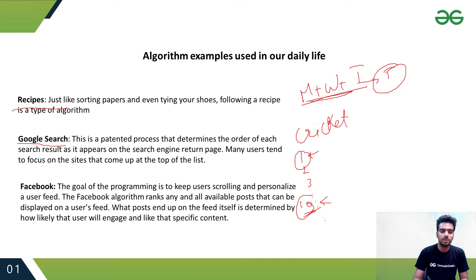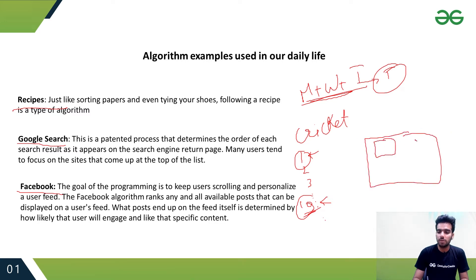Another example is Facebook or Instagram. In Instagram's search feed, it shows posts that are relatable to you. Whichever posts you like from any Instagram account, it shows more posts from that account to engage you. For this also, it uses Algorithms. So algorithms are used in our daily life like this.